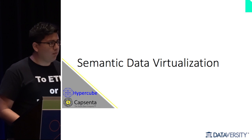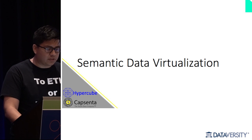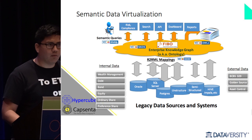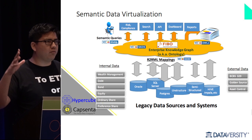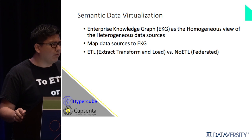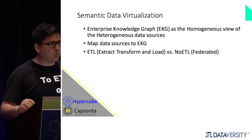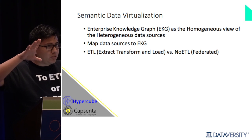Let's talk about the technologies — what we're calling semantic data virtualization. You have your underlying sources: your legacy relational sources, Oracle and so forth, internal data, and external data you want to connect. And then you have FIBO — your target view of the world. What you want is a homogeneous view of all your heterogeneous sources. This is your lingua franca — how you want your organization to talk, regardless of where your data is or how it's organized.